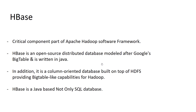HBase is a NoSQL database. NoSQL databases include MongoDB, Cassandra, and HBase, while SQL databases include MySQL and Oracle. Within NoSQL, HBase and Cassandra are column-oriented databases, whereas MongoDB is document-based.